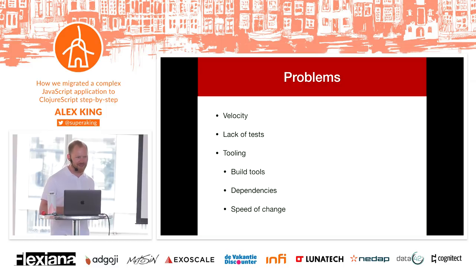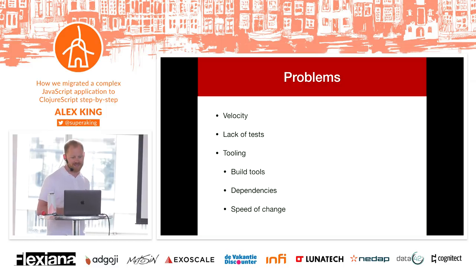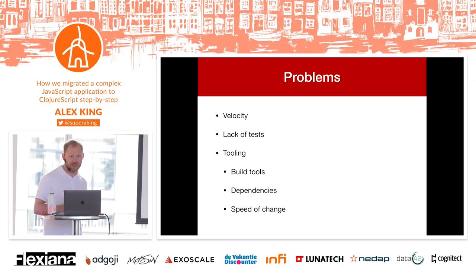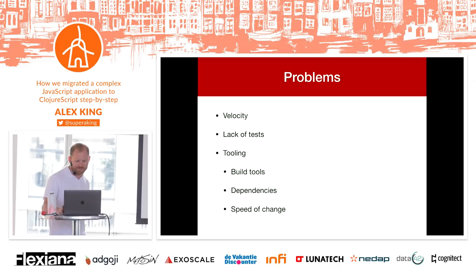To summarize: velocity — the speed at which we can add features — is a problem. Tests are a problem, certainly the ones towards the top of the pyramid where we're really lacking. And the tooling is also causing us problems, when we have to upgrade libraries or libraries are no longer maintained and we have to swap them. It's just slowing us down.